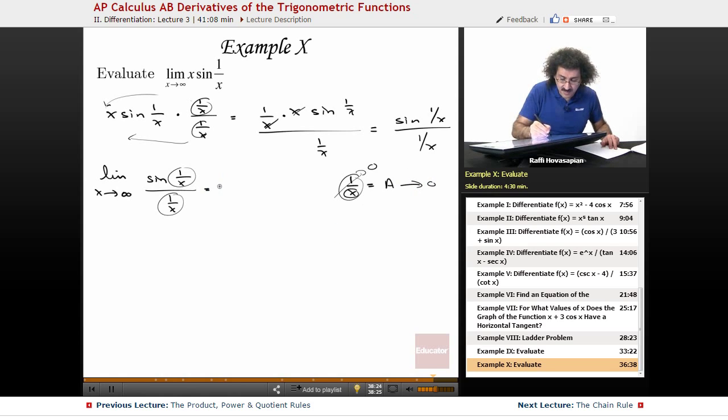So this is the same as the limit as a goes to 0 of the sine of a over a. We know what this limit is already. It's equal to 1. That's it. Mathematical manipulation.